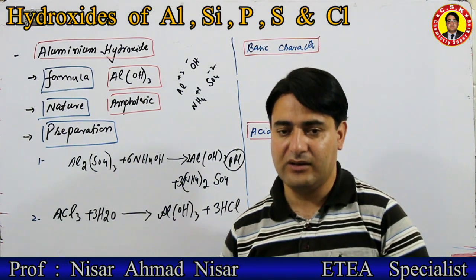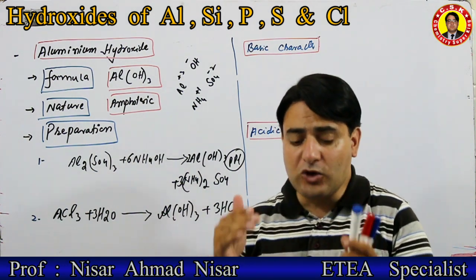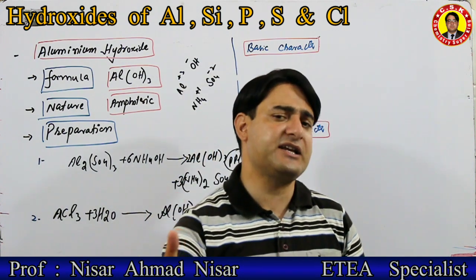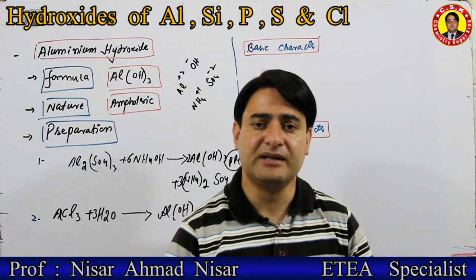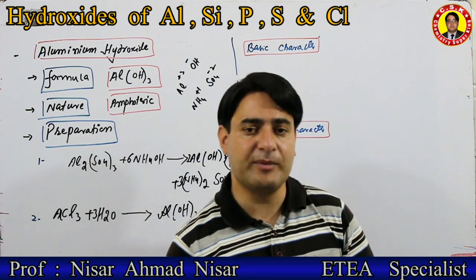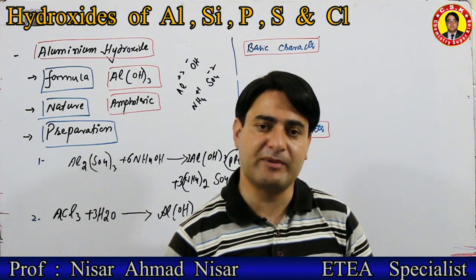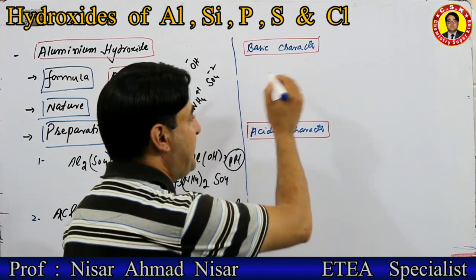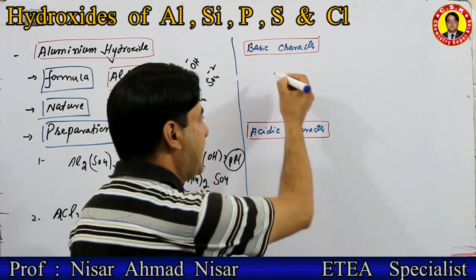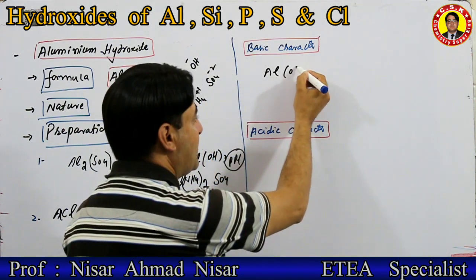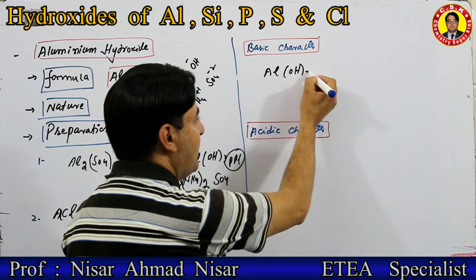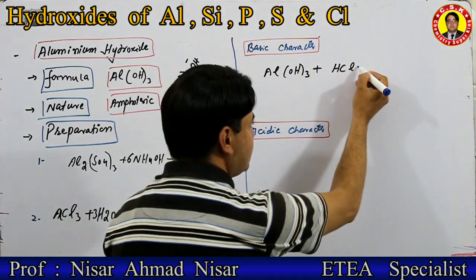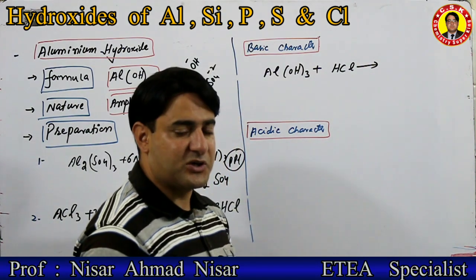Aluminium hydroxide کی nature چونکہ amphoteric ہے — یہ acid کے ساتھ اسی طرح reaction کرے گا جس طرح باقی bases جیسے sodium hydroxide اور magnesium hydroxide کرتی تھی — یعنی simple acid-base reaction کرے گا۔ اس کا basic character — یہ acid سے جب ملے گا — like HCl سے ملائیں گے — simple acid-base reaction ہوگا۔